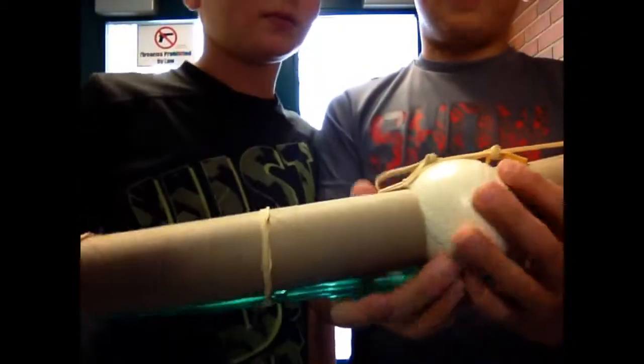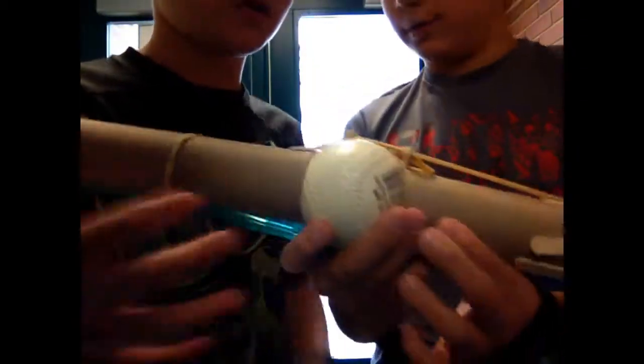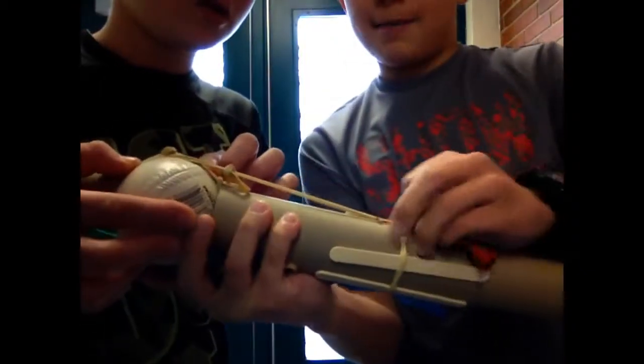So the bicep pulls like this. And then you pull the bicep and then it pulls the string which is attached to the bone and then the bone goes up.